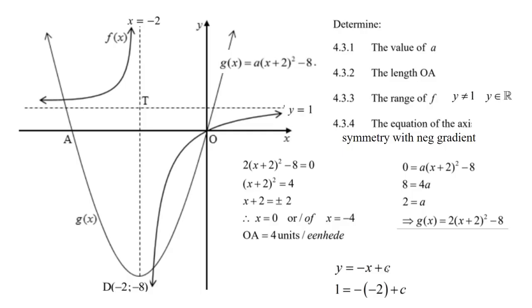It's minus x plus c. But y is 1 and x is minus 2. You just put that point in there. And now that'll be plus 2. You take away. c will be minus 1. So there's your equation. y equals minus x minus 1. And that's question 4.3 all done.